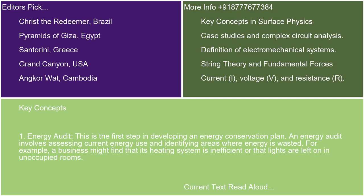Key Concept 1: Energy Audit. This is the first step in developing an energy conservation plan. An energy audit involves assessing current energy use and identifying areas where energy is wasted. For example, a business might find that its heating system is inefficient or that lights are left on in unoccupied rooms.